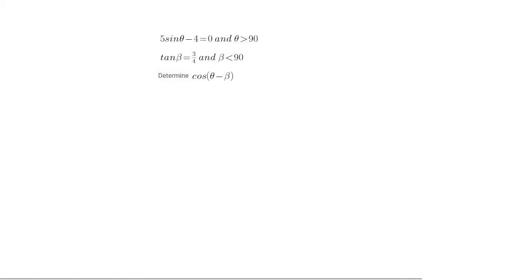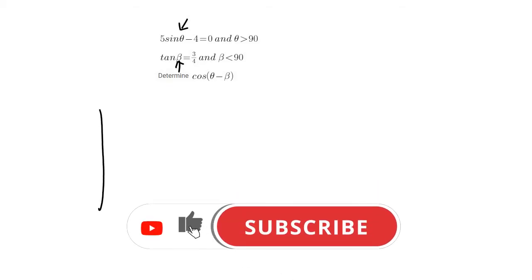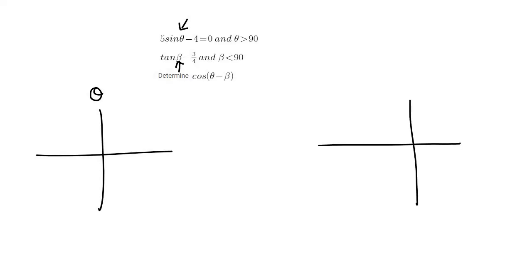All right, so questions like this need to be done on a cast diagram, but what I want you to see first is that there are two angles. There's a theta and a beta. This means we are going to use two different cast diagrams. So I'm going to put a cast diagram here, and we'll call that our theta cast diagram, and then over here, this can be our beta cast diagram.